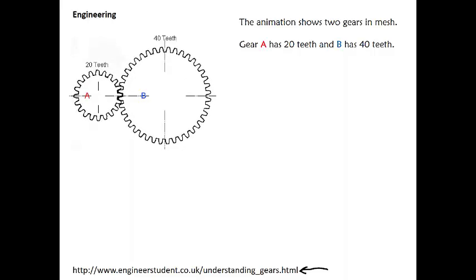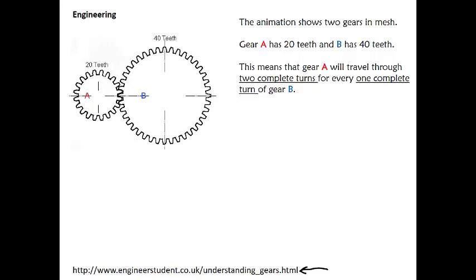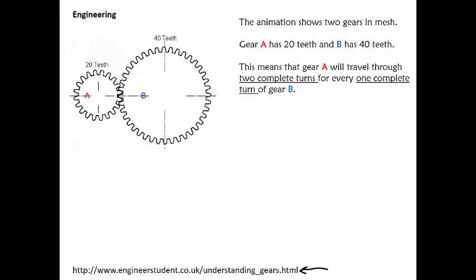So the animation shows two gears in mesh. That means that they're not hitting each other, they're working great, and gear A has 20 teeth and gear B has 40 teeth. This means that gear A will travel through two complete turns for every one complete turn of gear B. So if you want to watch it here for a second, you'll see that's exactly what's happening.